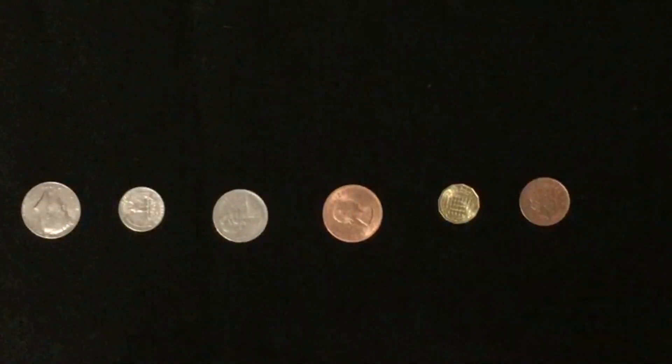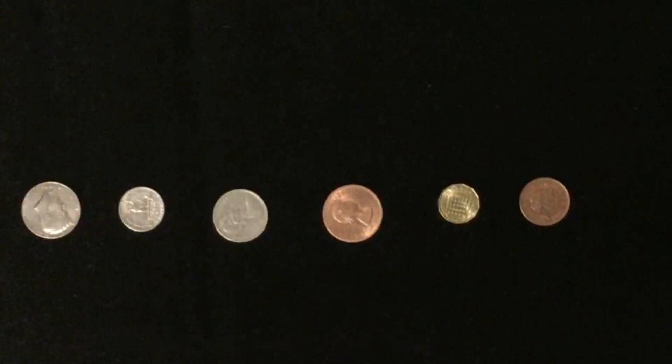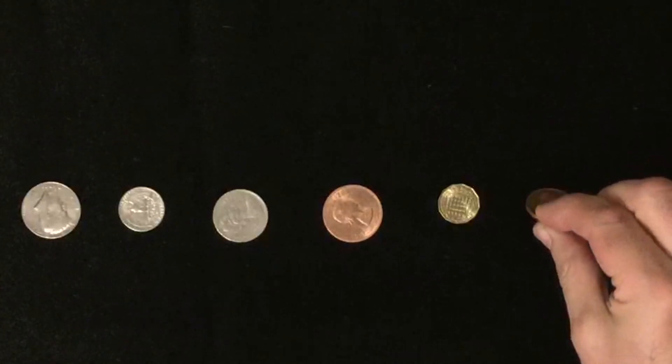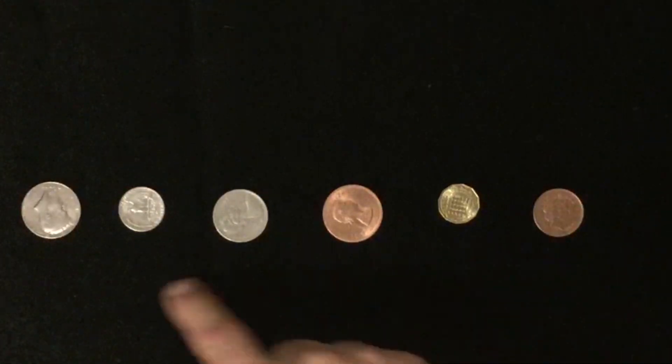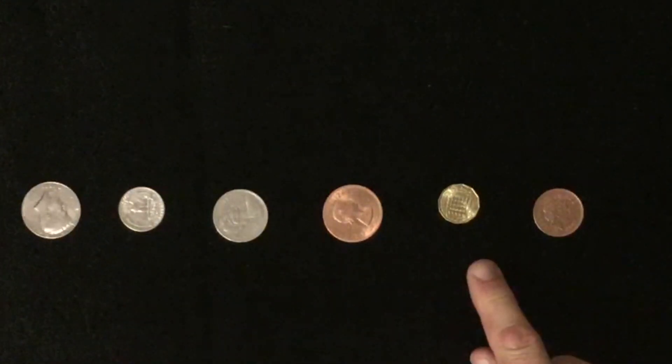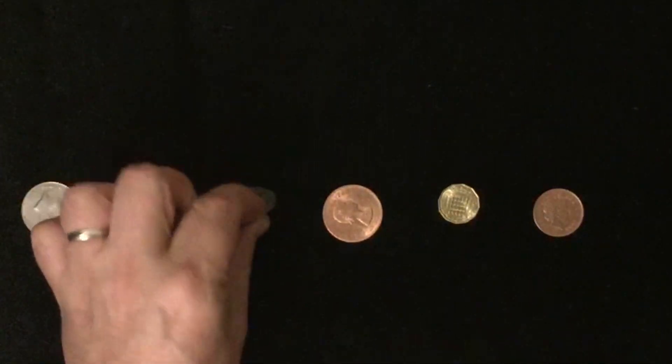What's going to happen is you're going to turn away while they do this. All you ask them to do is every time they turn over a coin is to say the word 'turn.' Every time. Now they can turn over each coin or none at all or they can turn over the same one multiple times to try to confuse you.